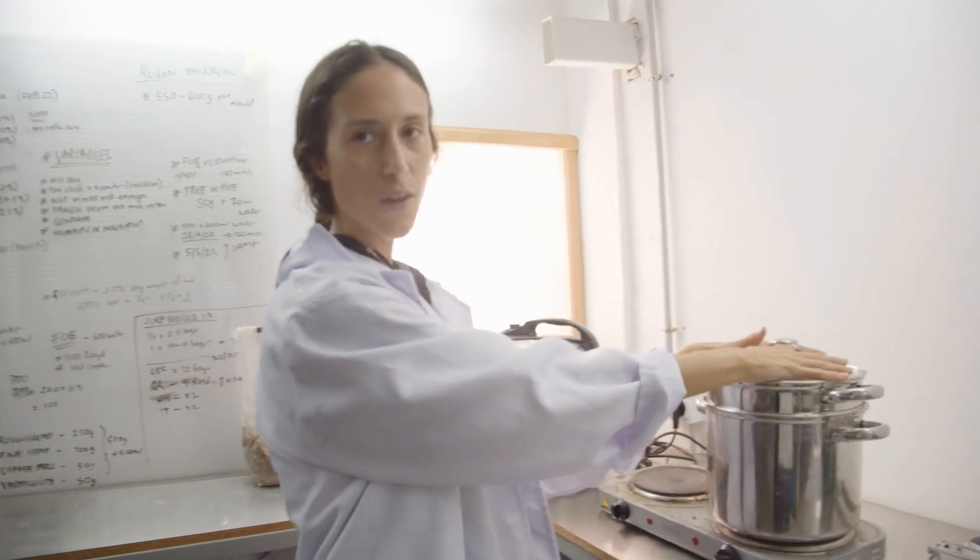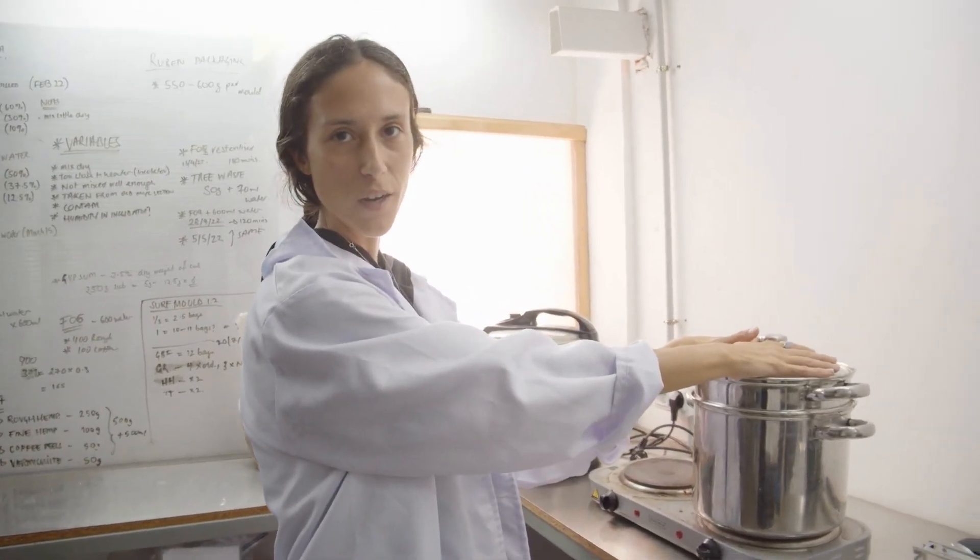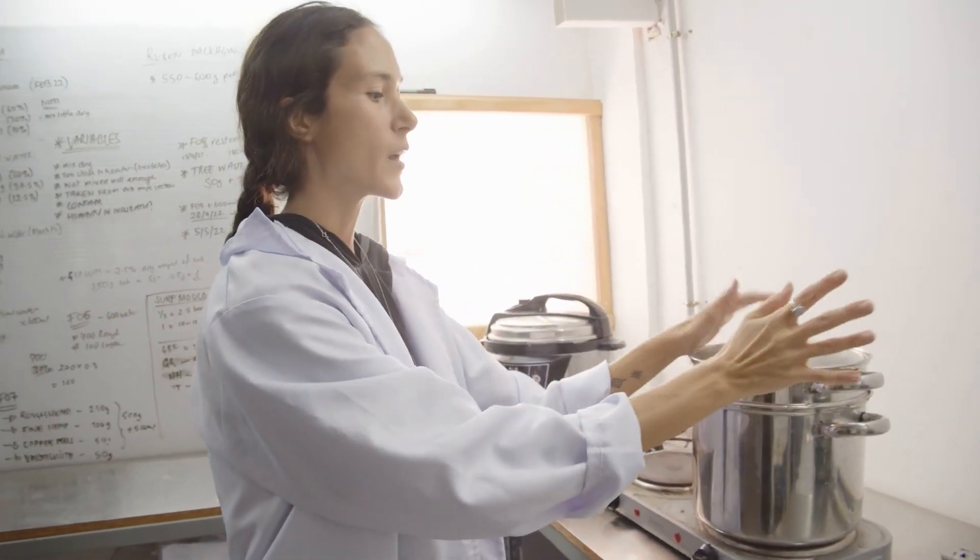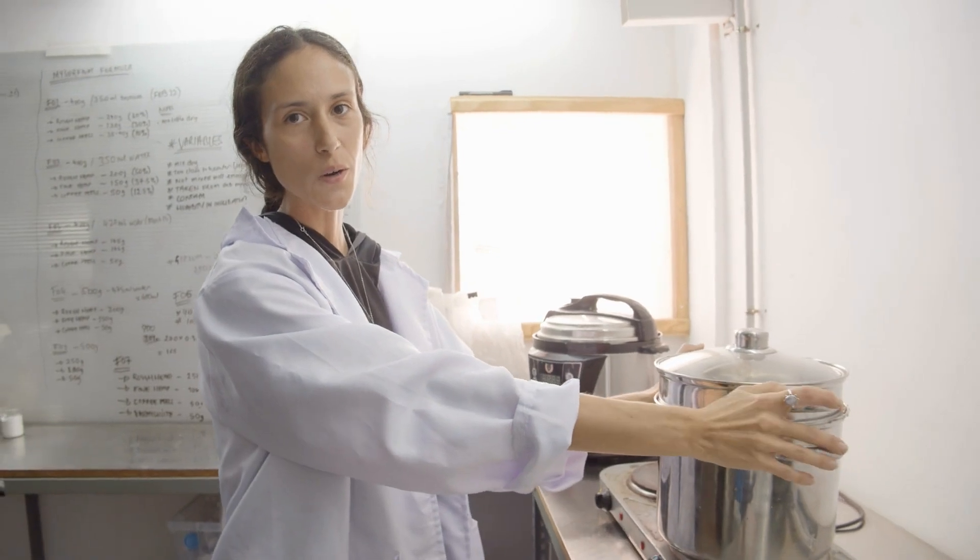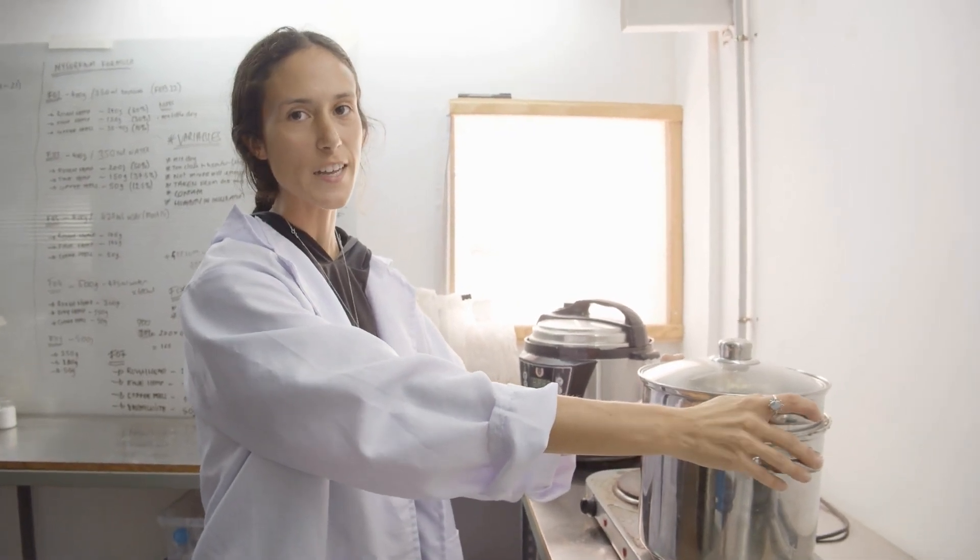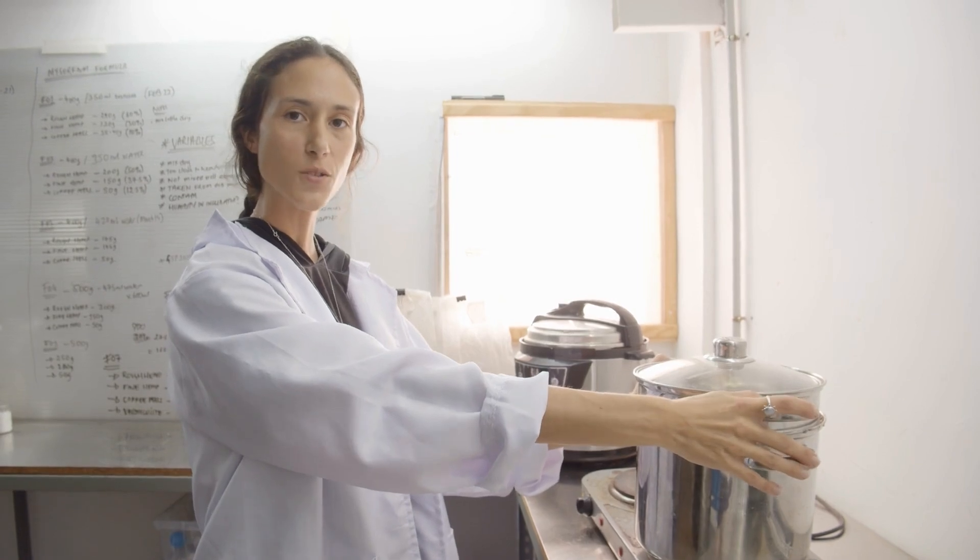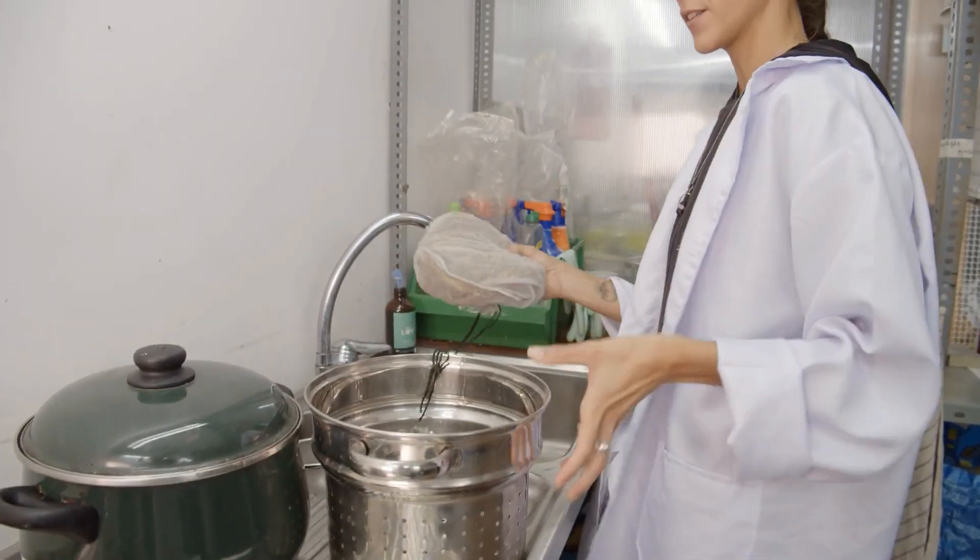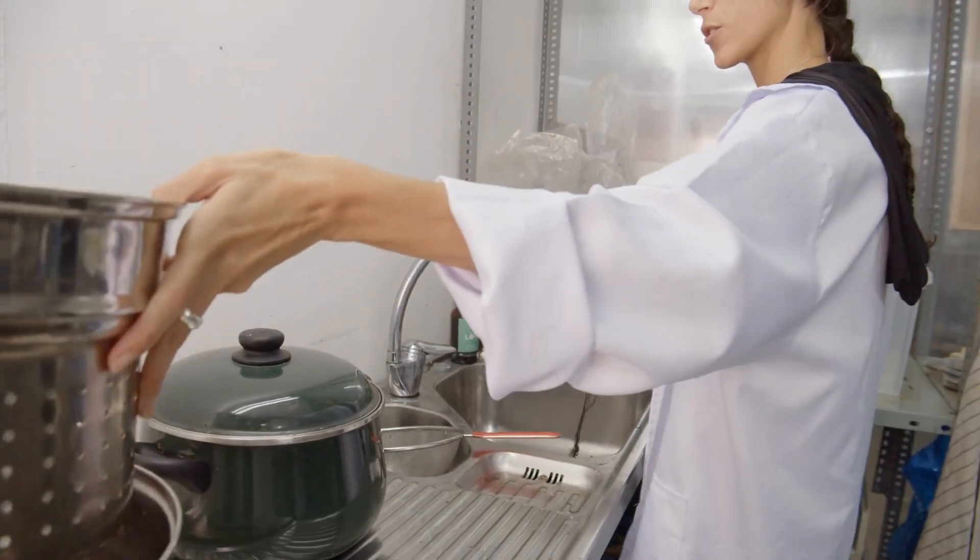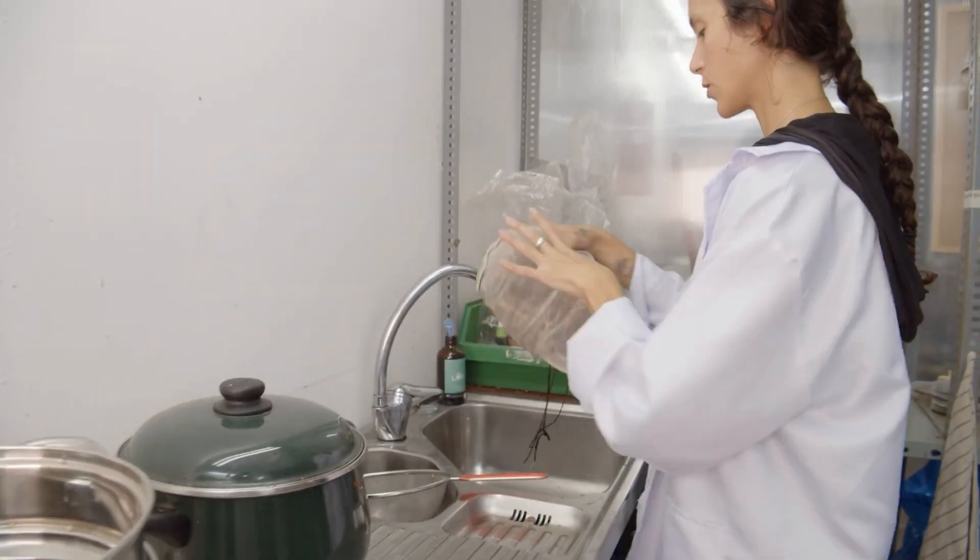We have allowed our substrate to pasteurize for a few hours and it has cooled, so now we're going to strain it and let it dry. You don't want it to be fully dry, you still want it to be holding a little bit of moisture. Just allowing it to dry for maybe an hour or so depending on how much substrate you have is perfect. Once you've allowed the substrate to strain a little bit, you can squeeze out some of the remaining water.